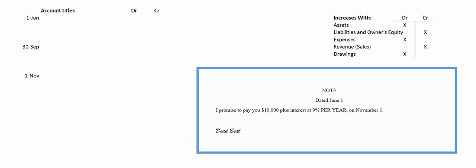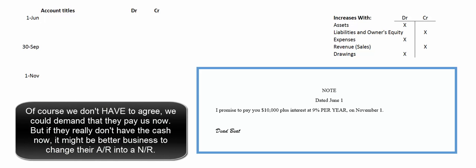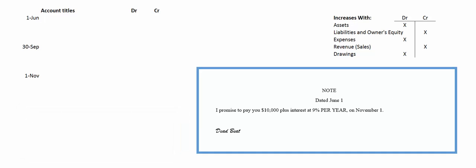Let's talk about changing an account receivable into a note receivable. It doesn't happen very often in the real world, but it's a great opportunity to talk about accrual accounting and calculating interest. Our customer Deadbeat owes us $10,000. He says he can't pay right now but has a big deal closing and should be able to pay by November 1st. So on June 1st we agree to change his account receivable into a note receivable with an interest rate of 9% per year.